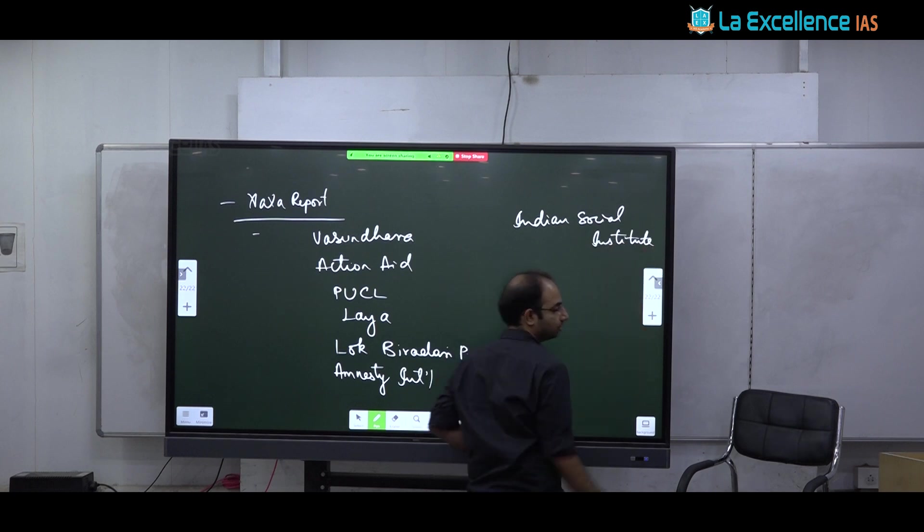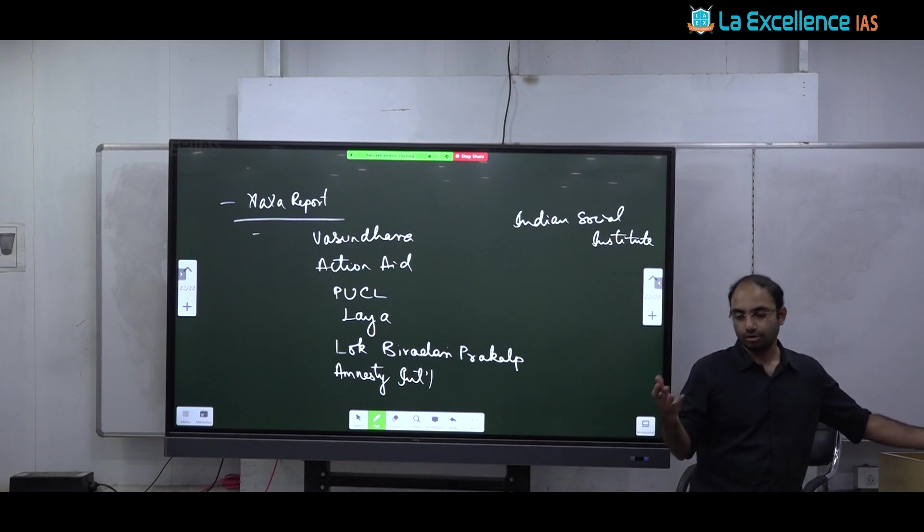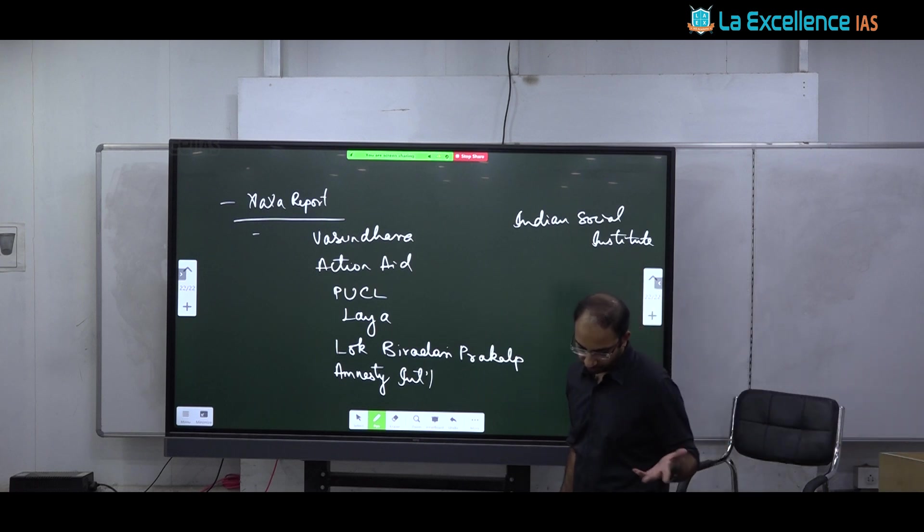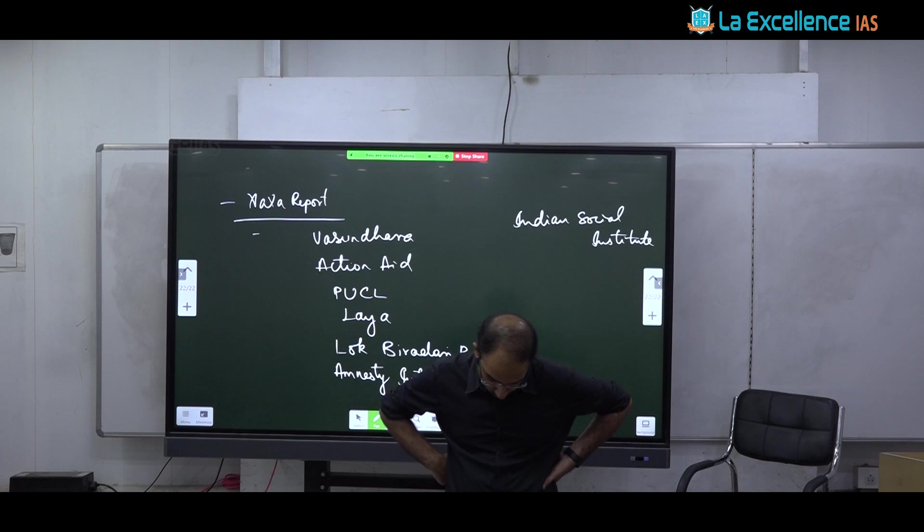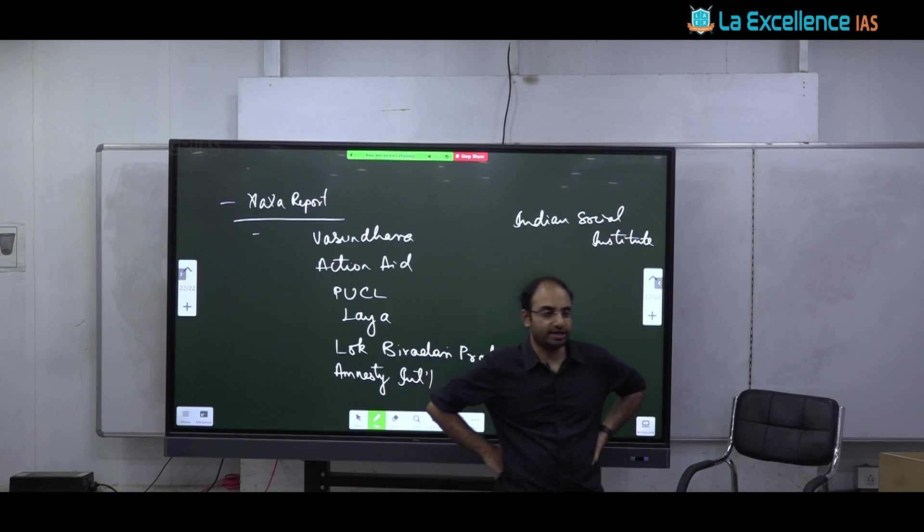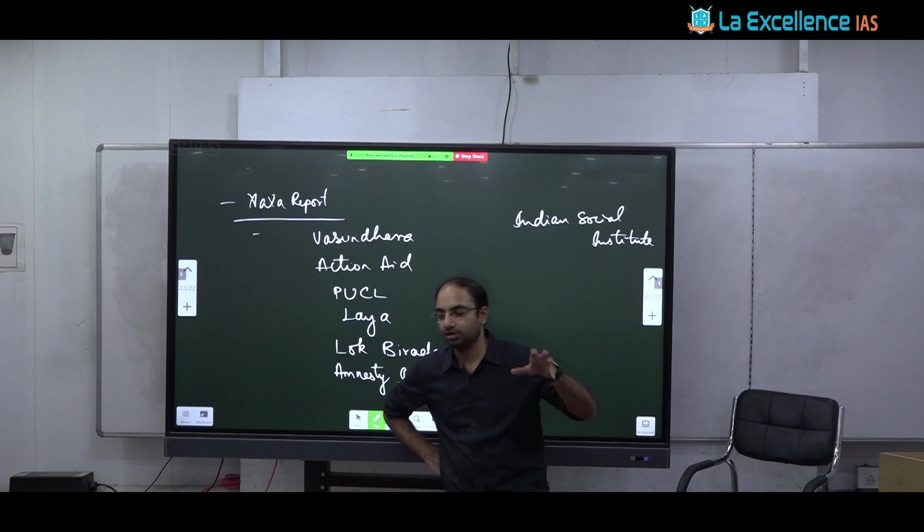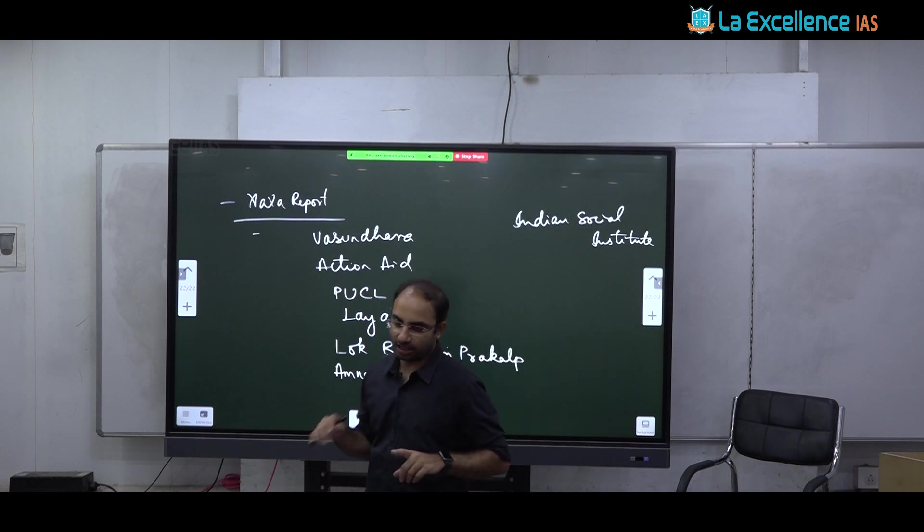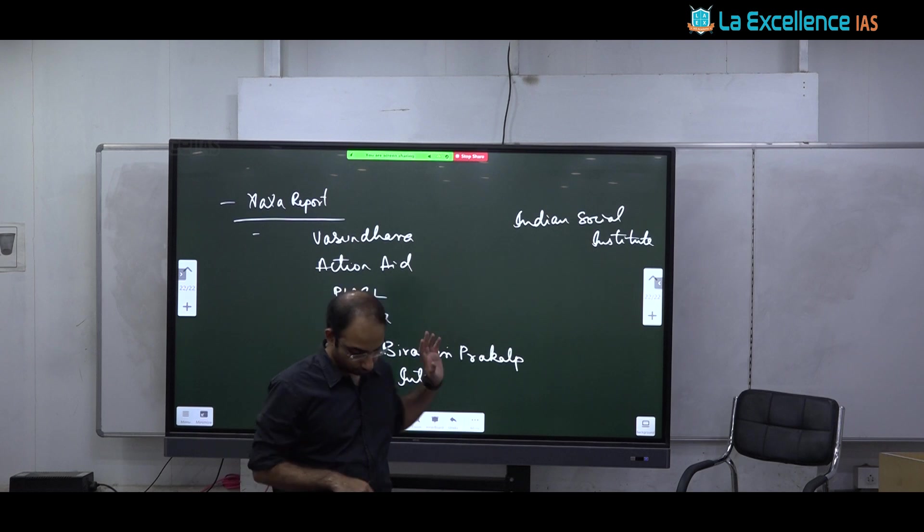You also have Amnesty International fighting on the issue of human rights. And yes, there is one more Indian social institute. So these are some NGO names. You can use these names to support your answer. In addition to what you already wrote, I also posted 5 NGO names in the group. Clear NGO is very simple. You can just use your GS to develop the answer. Next is 4C. Because NGOs are there in GS2 also. Most of the content is same. Just that here you will emphasize tribal problems. Tribal health, tribal education, and some tribal NGOs.